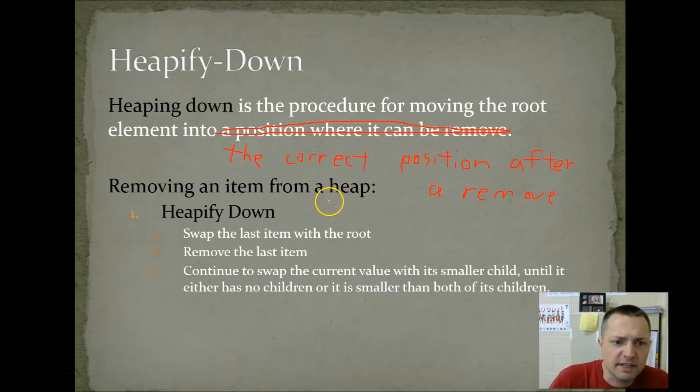Removing an item from a heap. Swap the last item with the root. Remove the last item. Continue to swap the current value, the root, with the smaller of its two children until it either has no children or it is smaller than both its children. If it is smaller than both its children, it is in the correct spot. And this is considering a minimum heap. We'll see examples of this one in a little bit. So, if this slide didn't make a whole lot of sense, I'm sorry for that. But, it'll make sense when I actually show you the process of heapifying down.